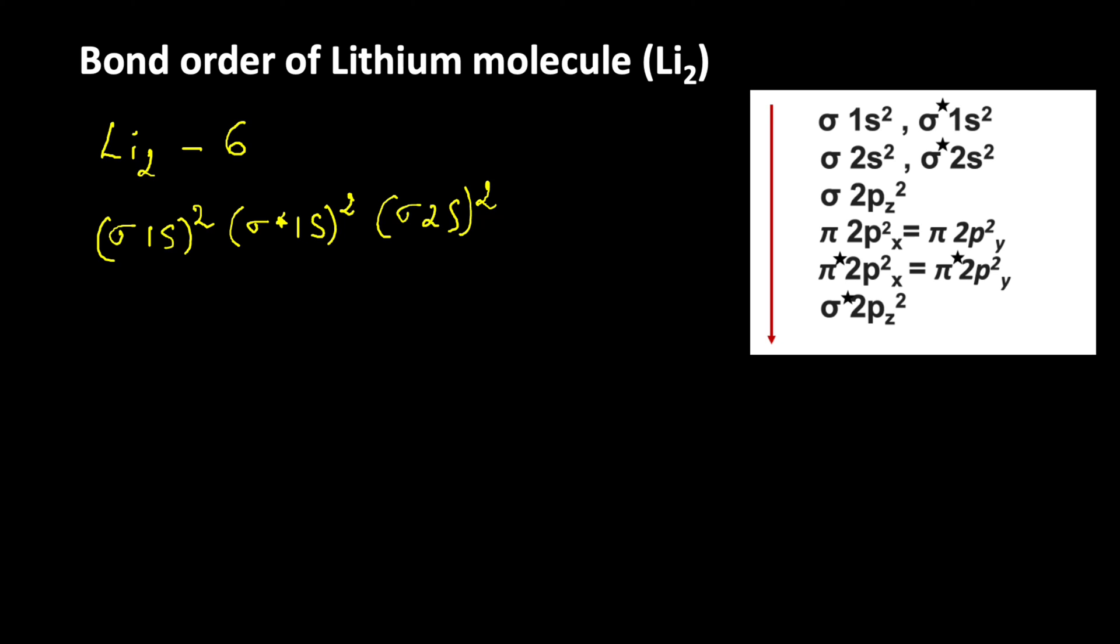Using this, let us write the bond order. Bond order is equal to Nb minus Na by 2, where Nb is the number of bonding electrons and Na is the number of anti-bonding electrons.